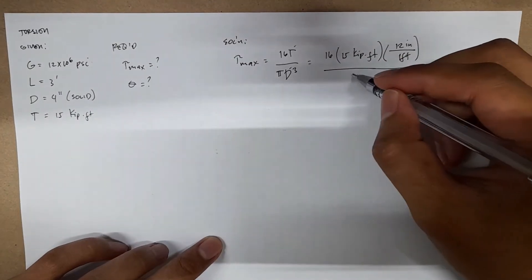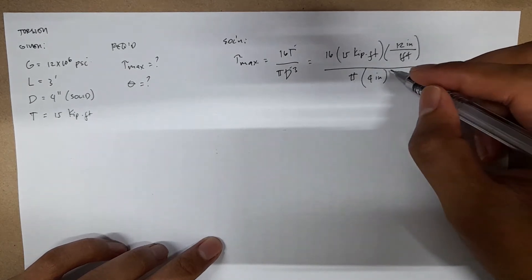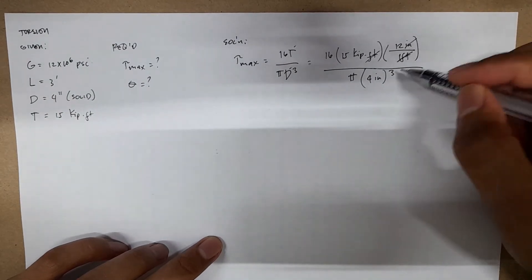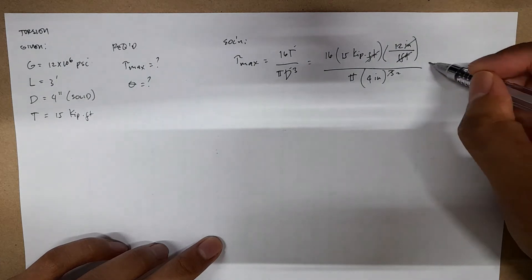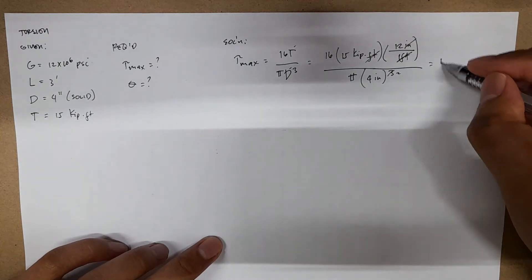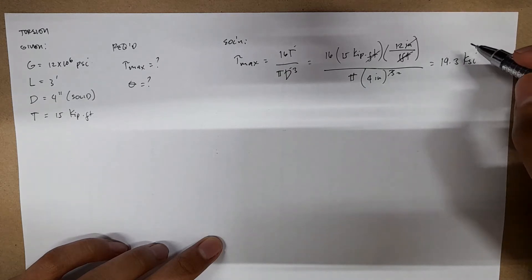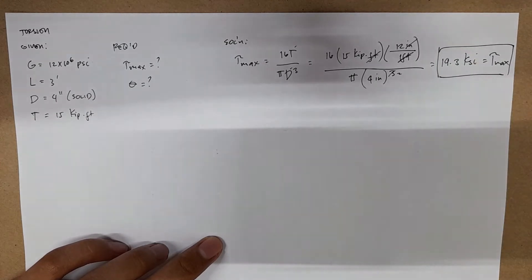Then we have π, then 4 inches cubed. This cancels out, this becomes 2, we now have inches squared or KSI. We have 10.3 KSI as the stress max. That's it—that's one down.